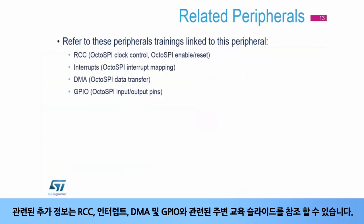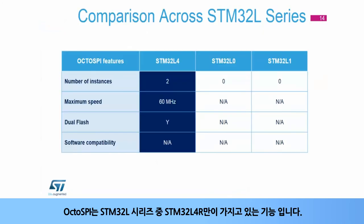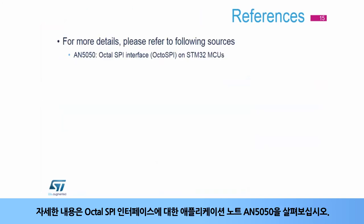You can refer to peripheral training slides related to RCC, interrupts, DMA, and GPIO for additional information. OctoSPI is an exclusive feature of the STM32L4R among the STM32L series. For more details, please have a look at application note AN5050 about the OctoSPI interface.